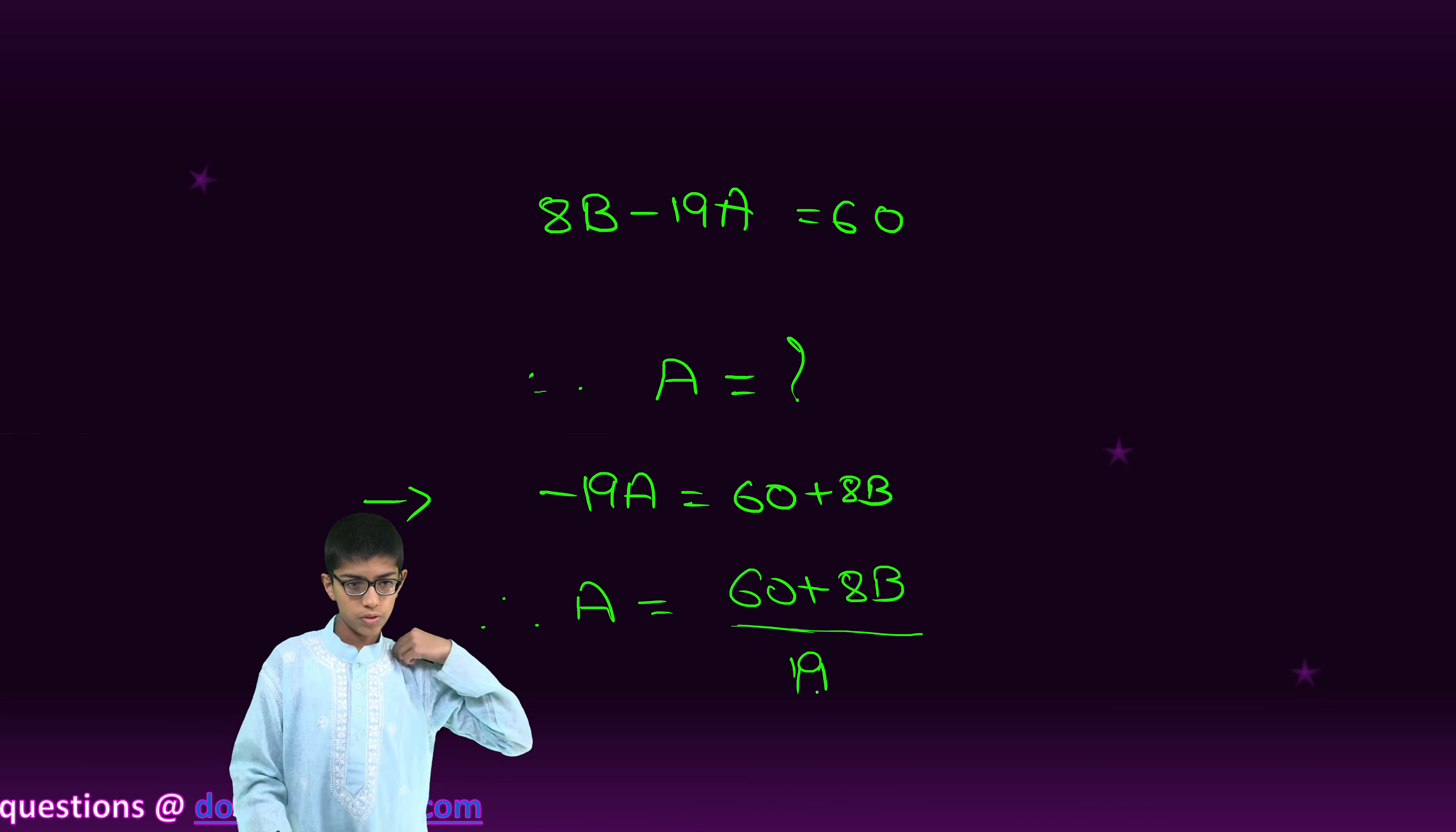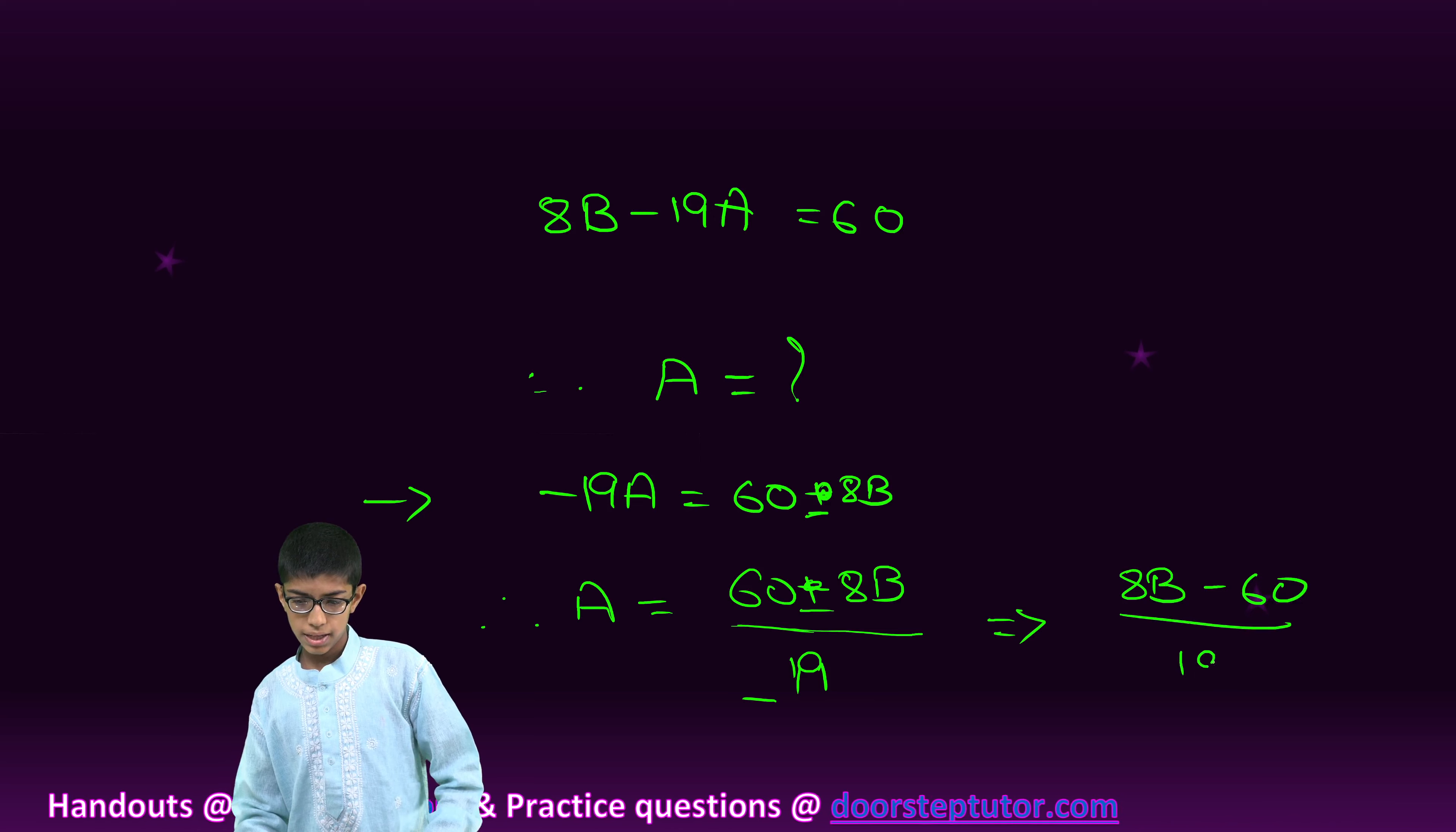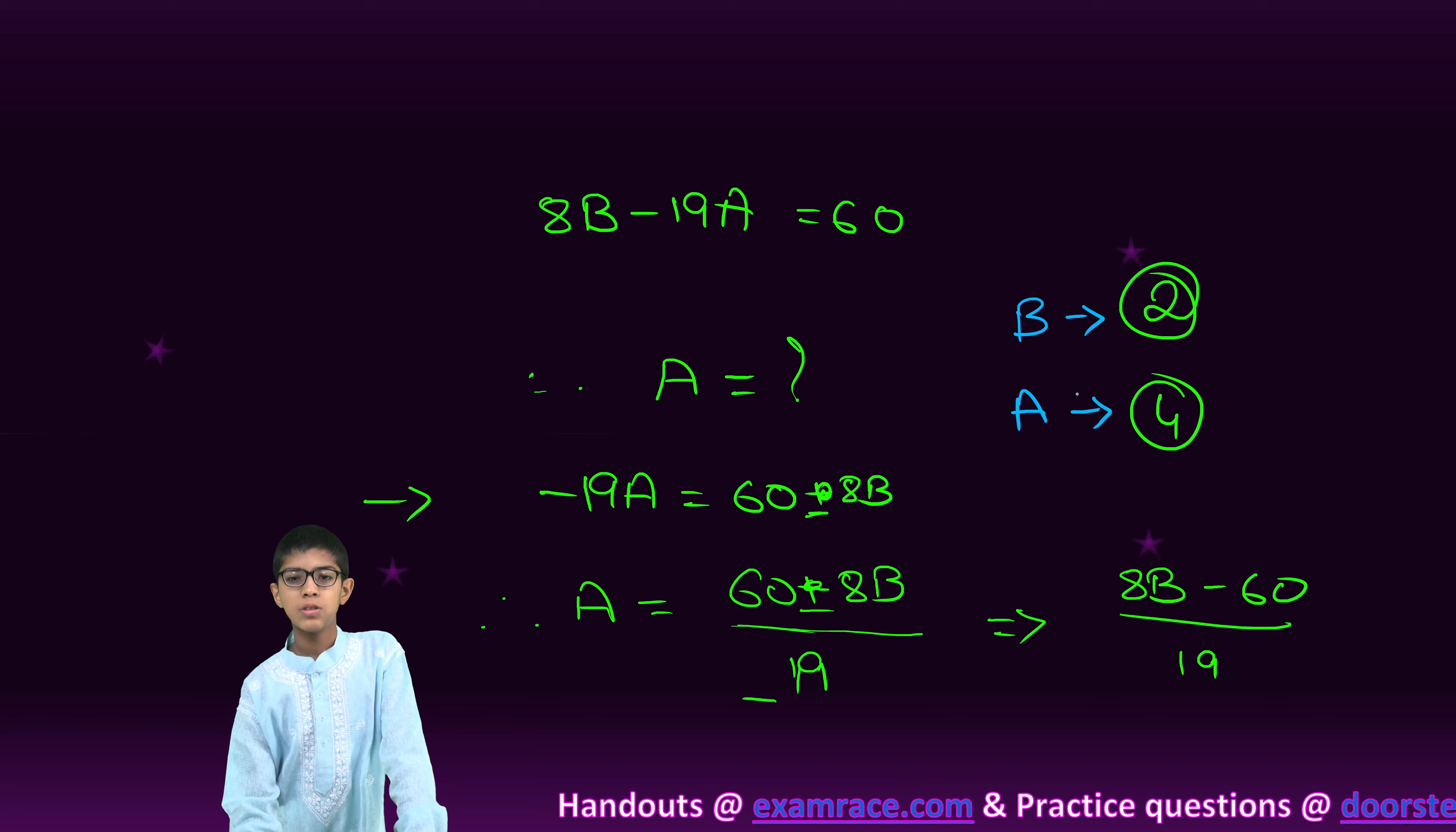And so, finally, we get 8B minus 60 by 19A is equal to this value. Now, just with one integer condition of B that is 2, we get A equals to 4.